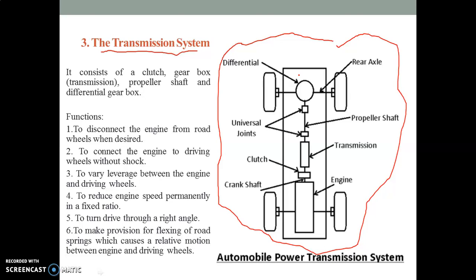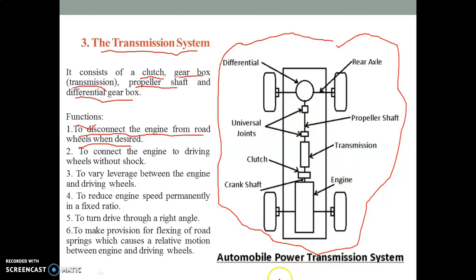The transmission system serves the following purposes in an automobile. Its functions include disconnecting the engine from the road wheels when desired. Let's discuss the various parts of the transmission system. It consists of a clutch, gearbox, propeller shaft, and differential gearbox. This is the general schematic diagram of an automobile power transmission system.